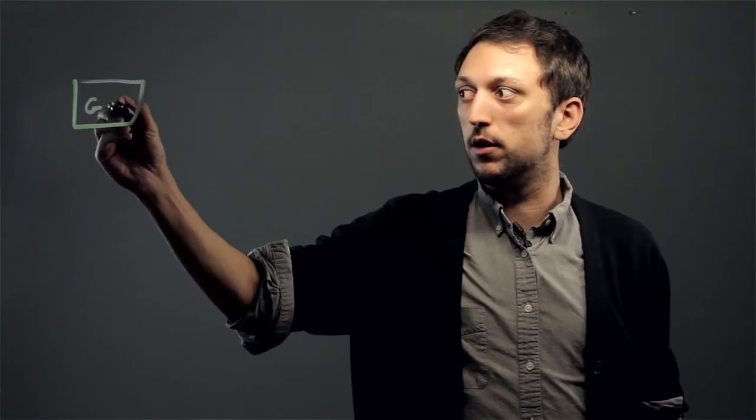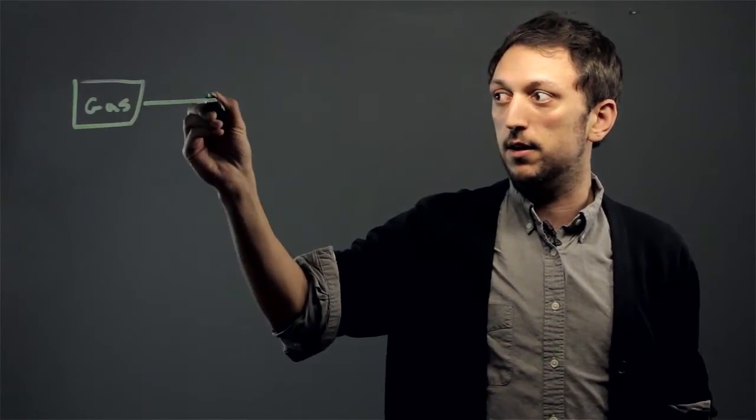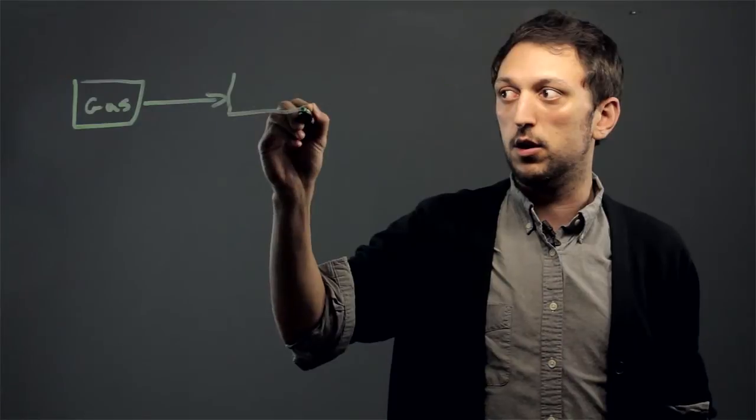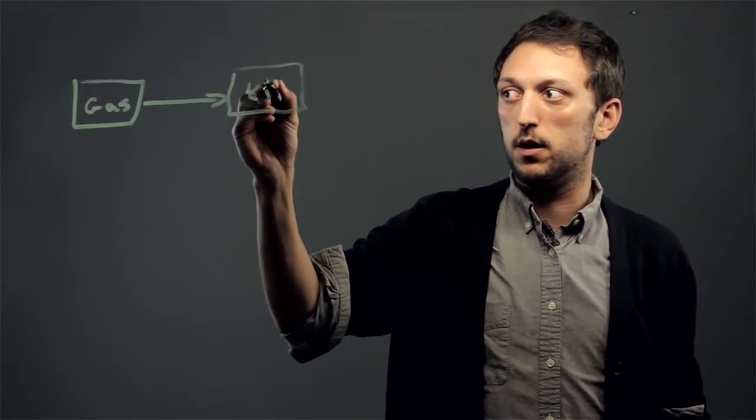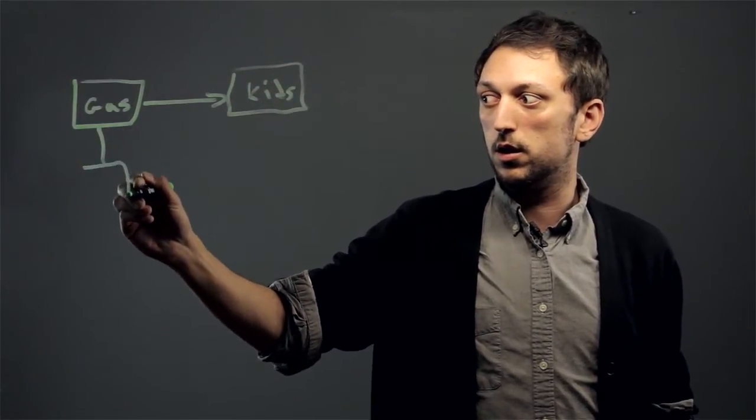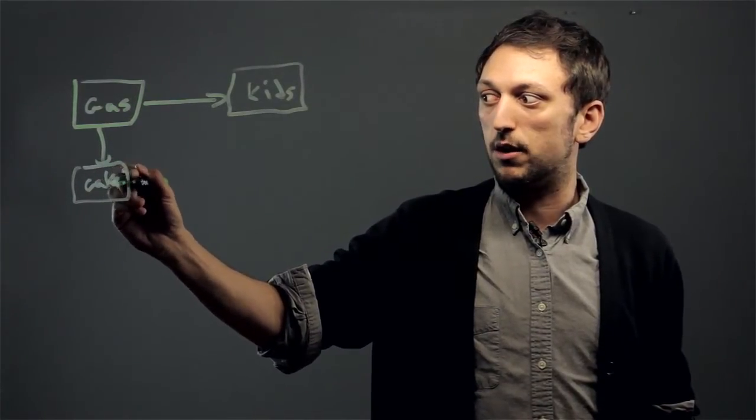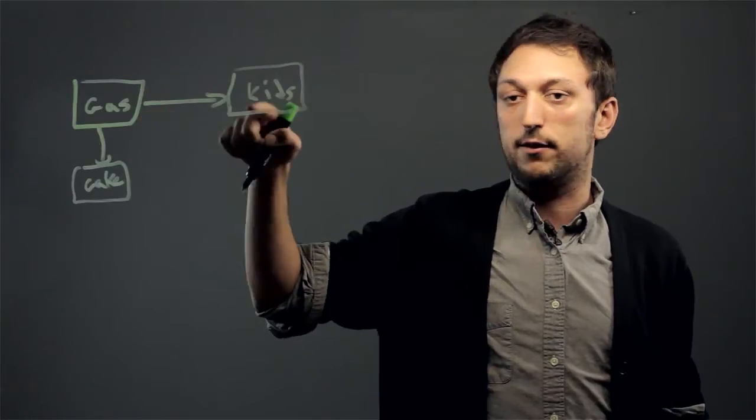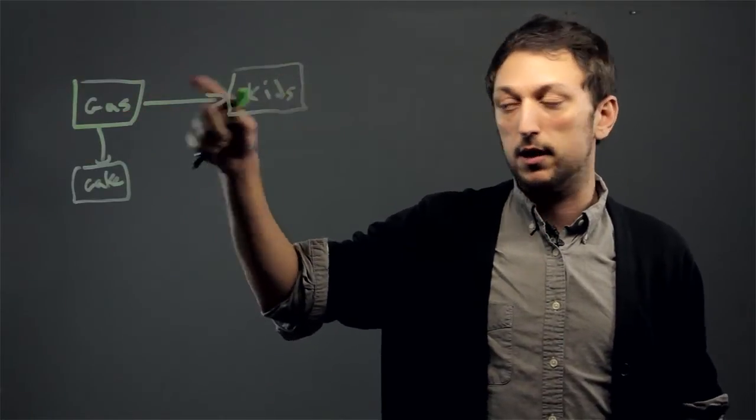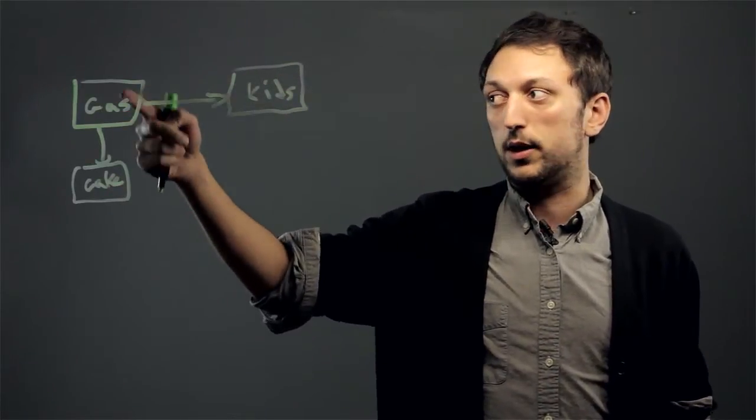if you were driving and you wanted to pick up your kids and pick up a cake, but you needed gas, we would make a box for gas and then a box for kids or cake. The arrow would flow from gas because you can't pick up your kids or pick up the cake without getting gas first.